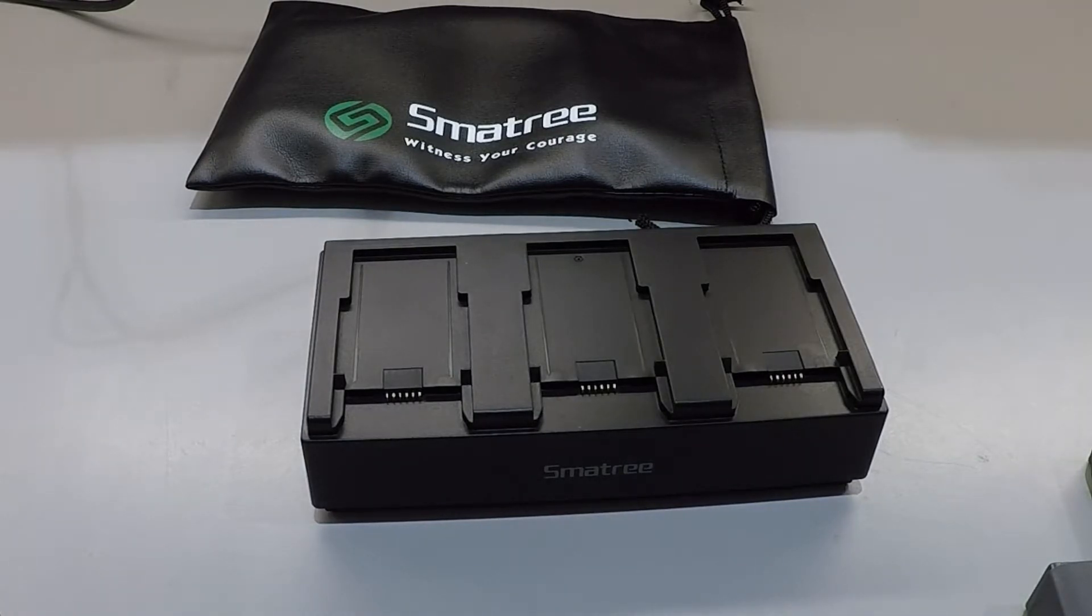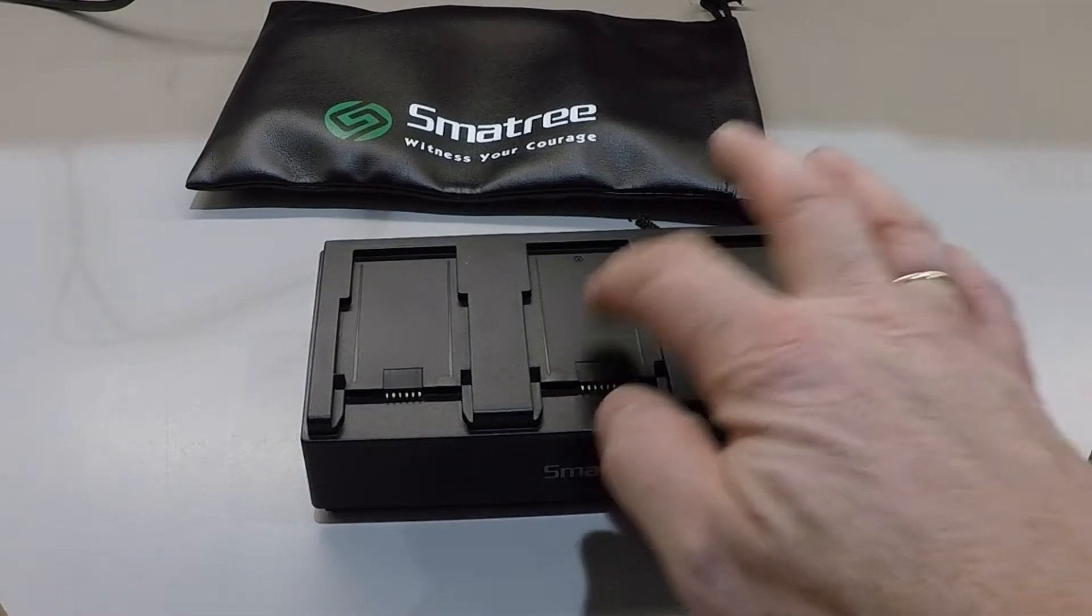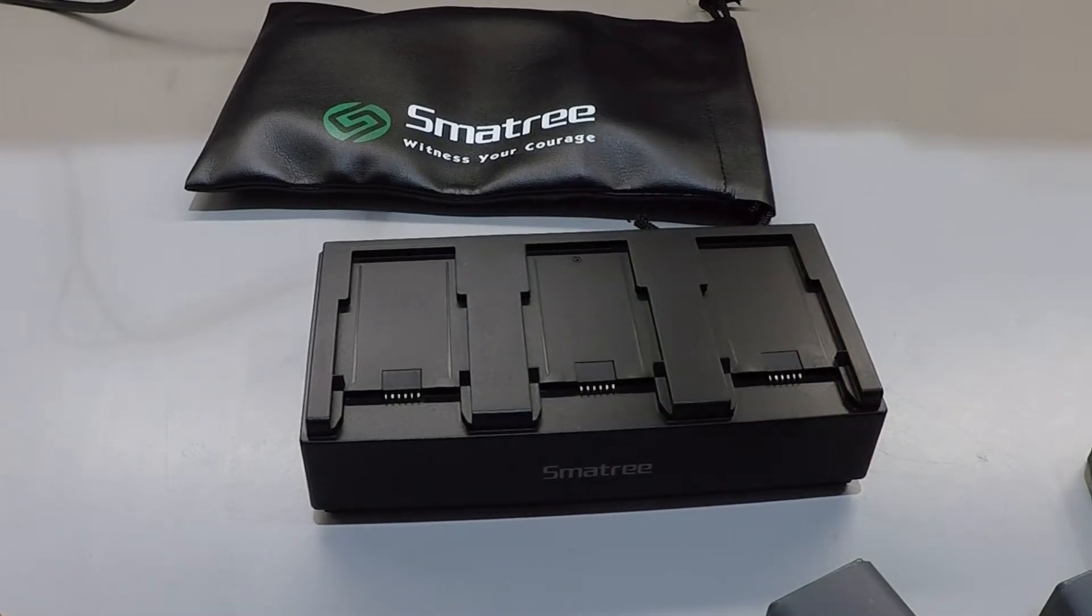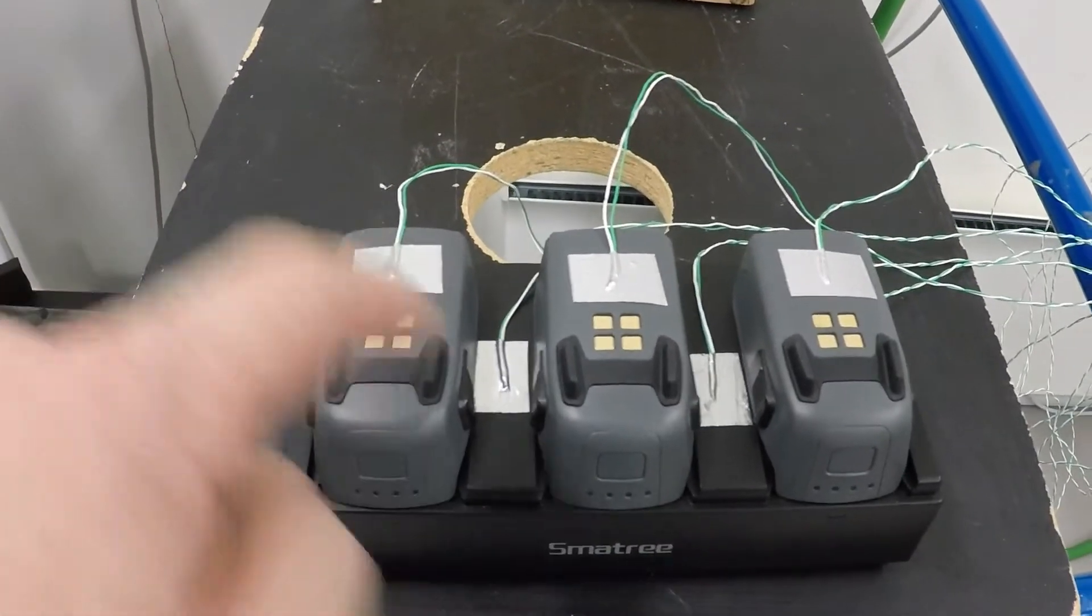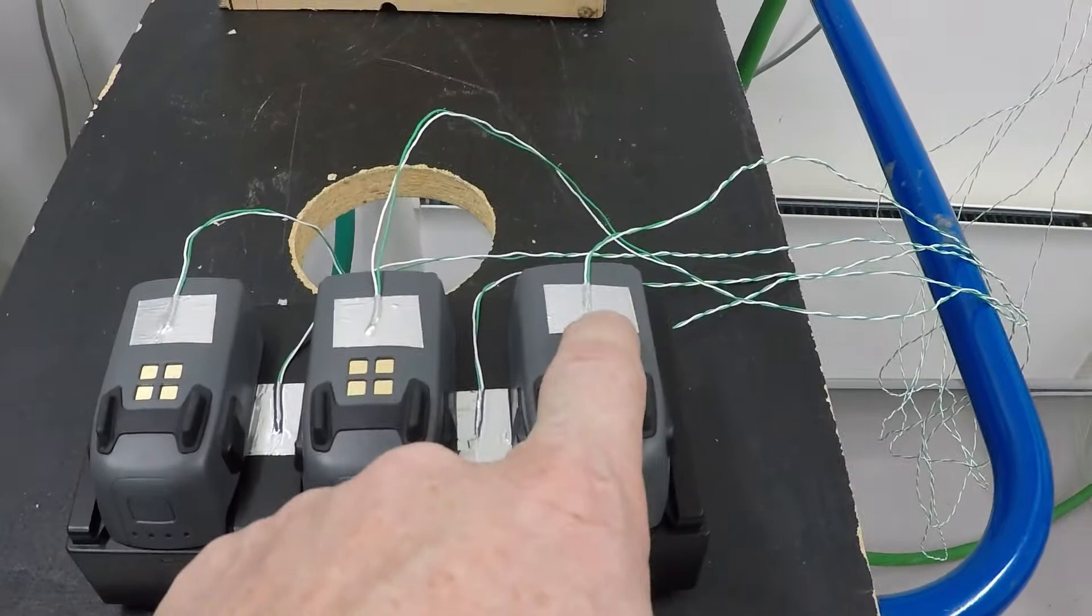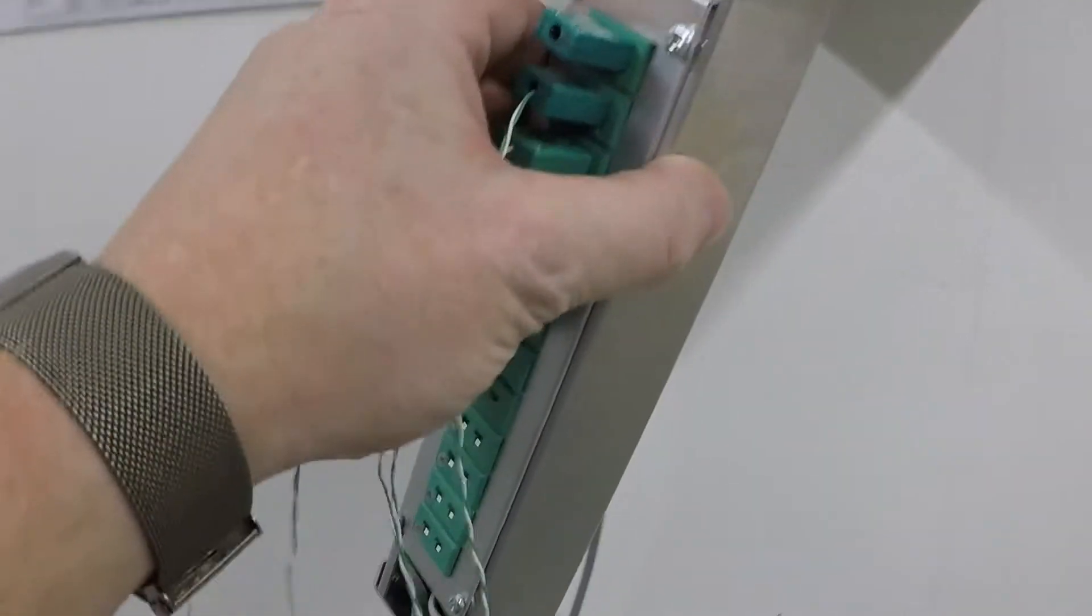Then I would like to do the temperature measurement on each of the cells and on top of these two. One for battery one, between the batteries, battery two, between batteries again, and battery three. And all are connected to this measurement device.